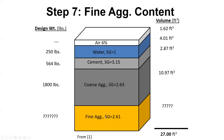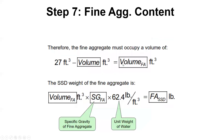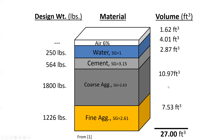Step seven: fine aggregate. This is essentially treated as the filler. You simply take 27 and subtract all the other volumes — water, cement, air, and coarse aggregate. For example: 27 minus 10.97 minus 2.87 minus 4.01 minus 1.62 gives you 7.53 cubic feet of fine aggregate. Then you use the specific gravity and unit weight of water to convert that volume back to the weight of fine sand at SSD condition.